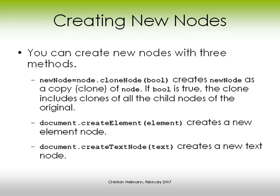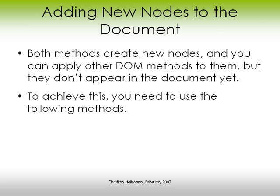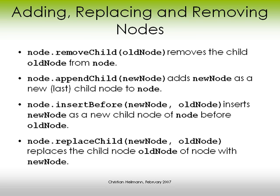You can create new nodes with three methods. cloneNode takes a copy of an existing node, and based on the boolean you provide, either copies all its child nodes or not. createElement creates a new element node, and createTextNode creates a new text node. Both create new nodes you can manipulate with other DOM methods, but they don't appear in the document yet. To make things appear, you use: removeChild (removes an old child), appendChild (appends a new child), insertBefore (inserts before an old node), and replaceChild (replaces an old node with a new one).